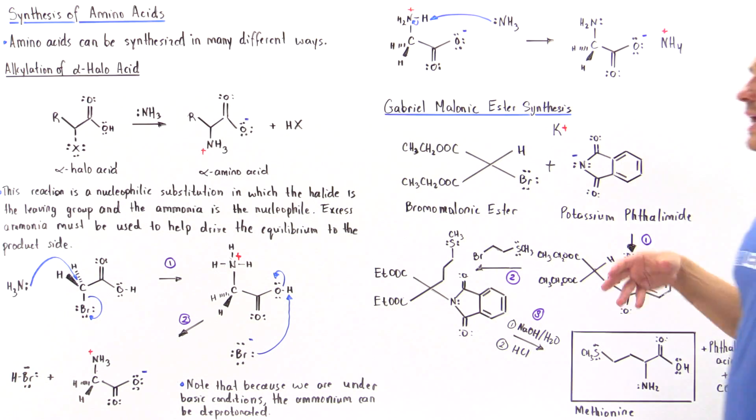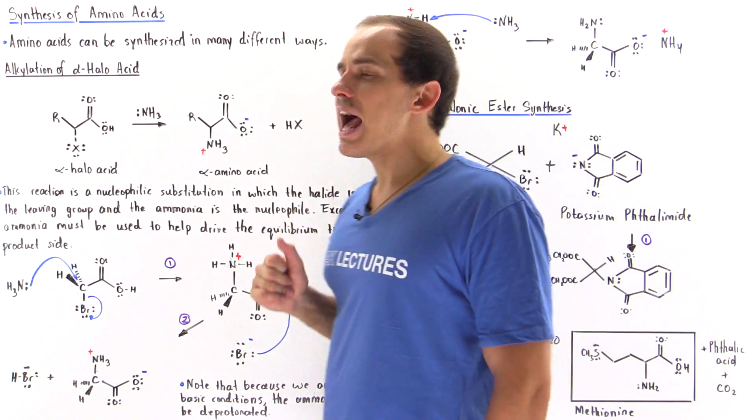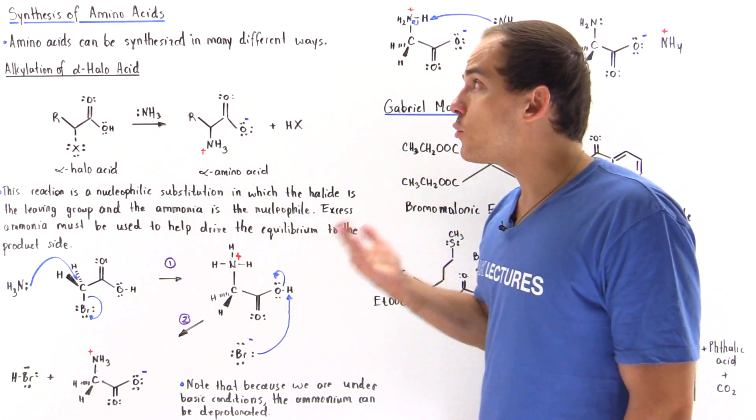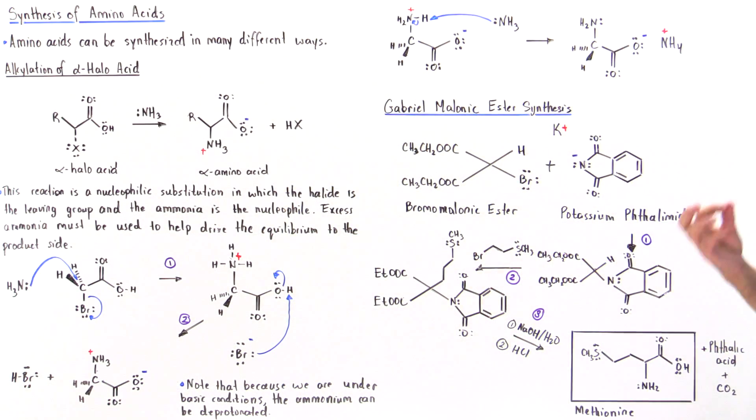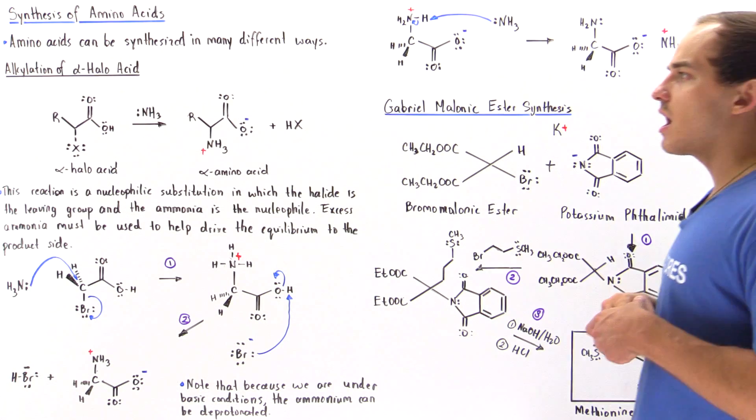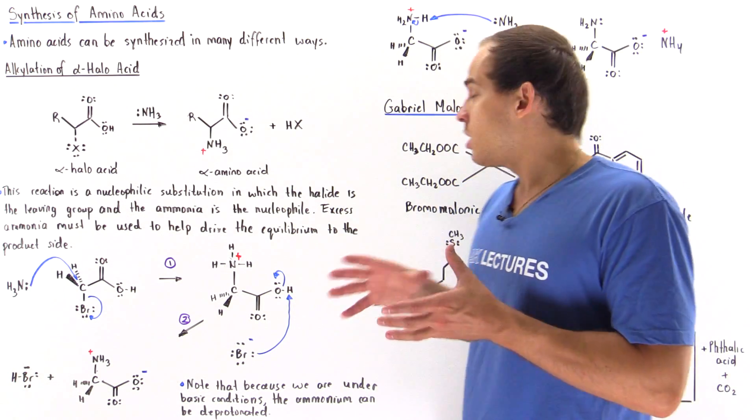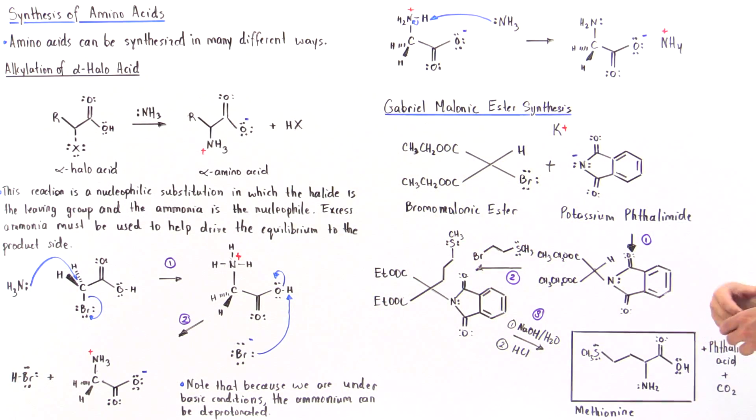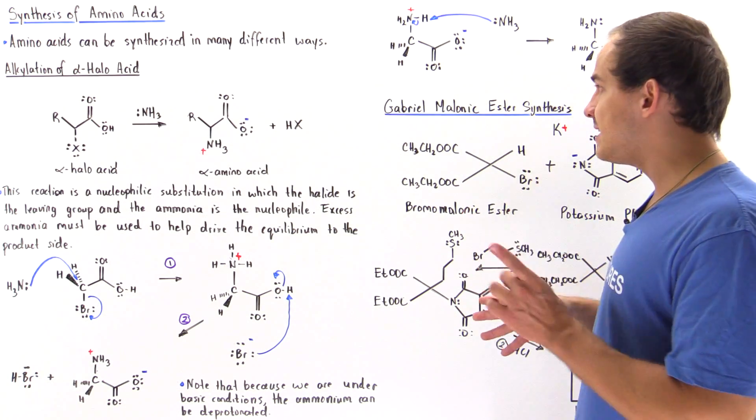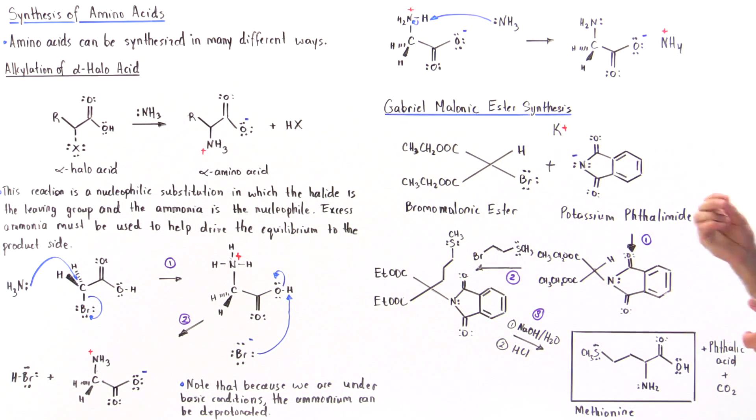Now, this is one way in which we can form the alpha-aminoacid. Another way to form amino acids is via reaction known as Gabriel synthesis or Gabriel-Malonic ester synthesis. Now, we're not going to discuss the reaction mechanism. We'll simply look at the steps.